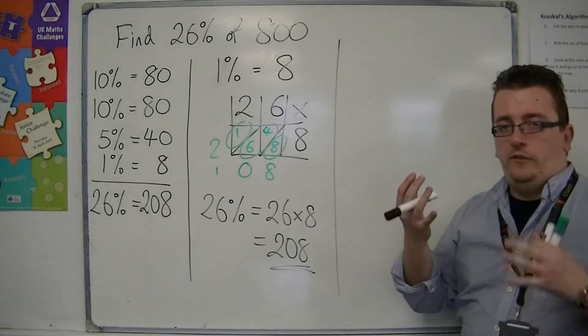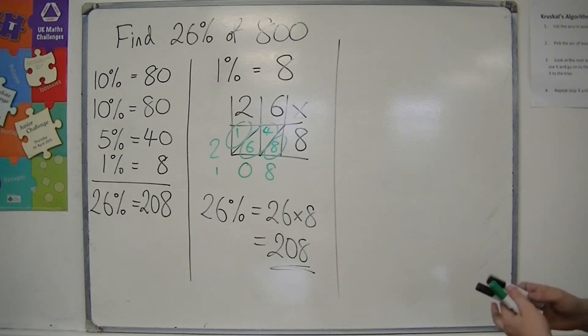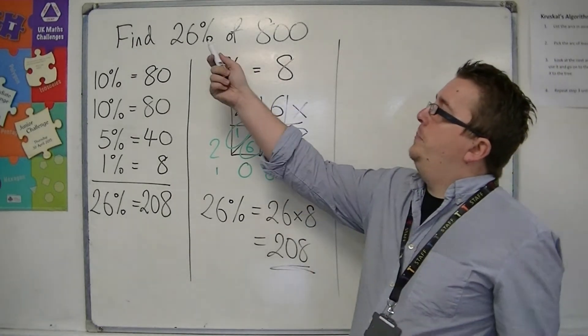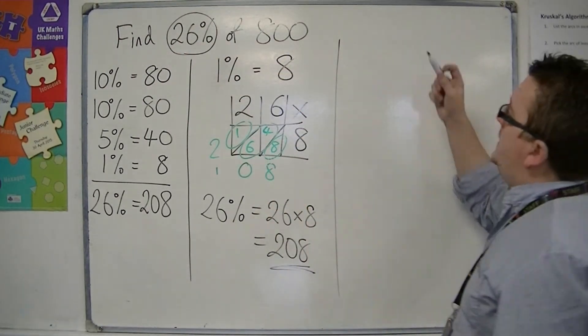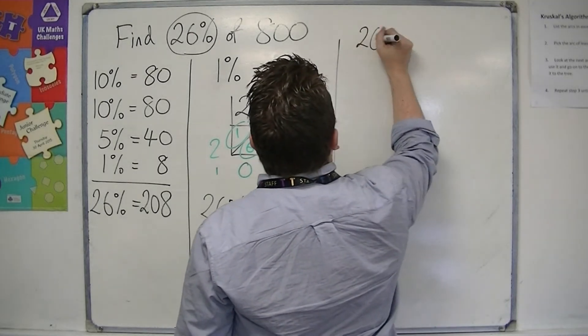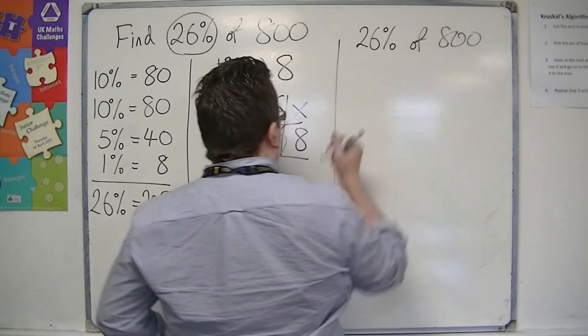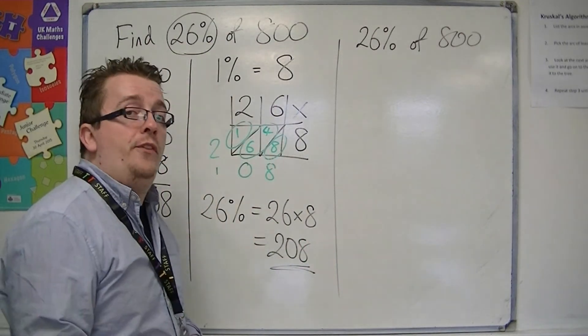The third method is to be used on a calculator. And what it involves is turning the percentage into a decimal. So 26% as a decimal is 0.26. And the way to get that is by dividing by 100.